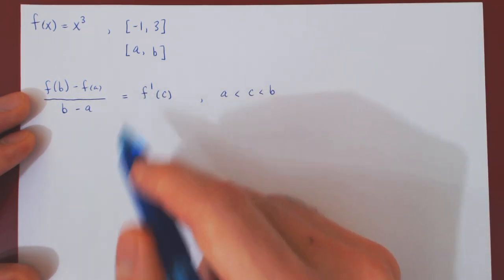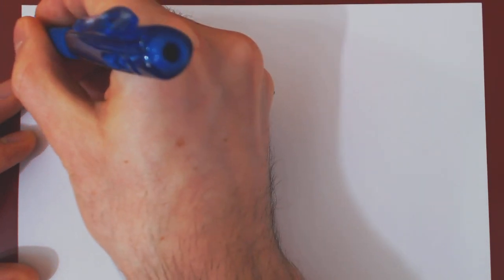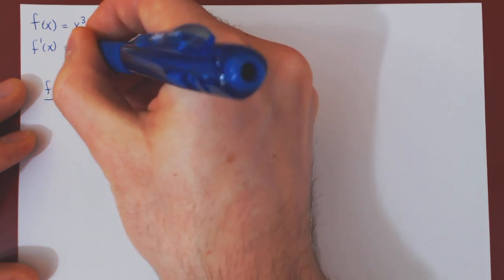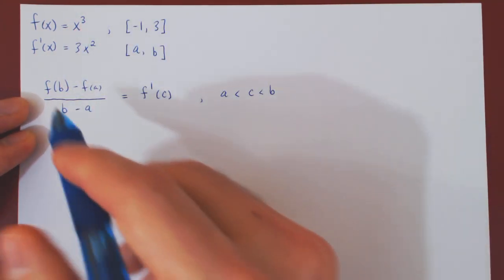Well, we'll need the derivative of the function, so if f of x is x cubed, by the power rule f prime of x is 3x squared.